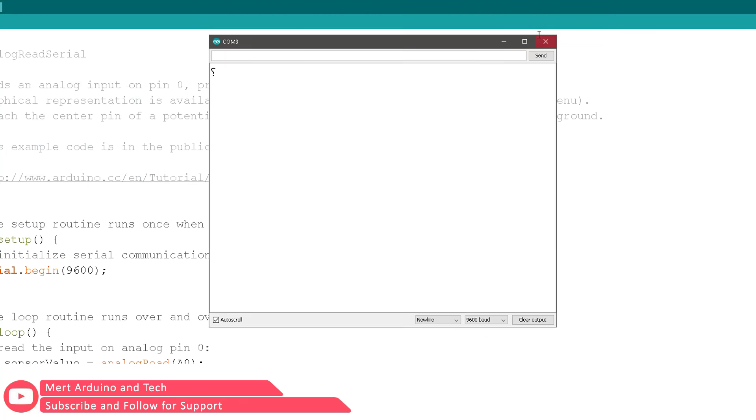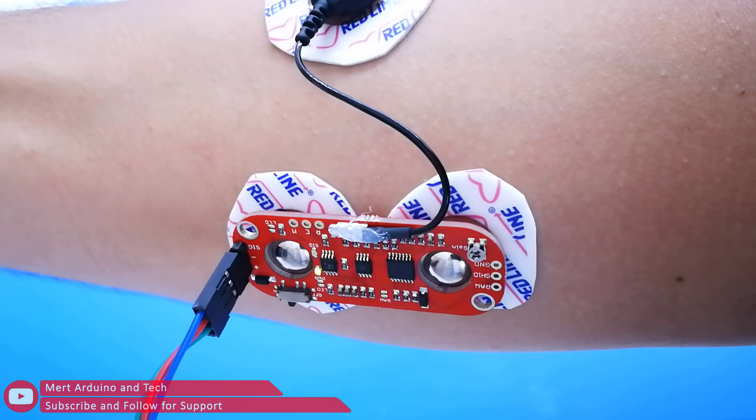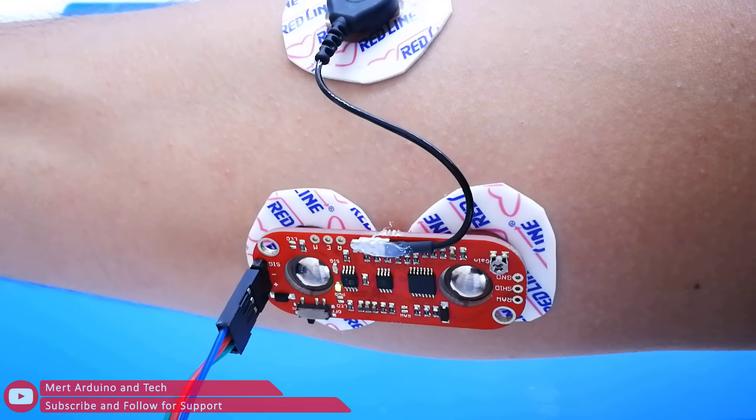Open up the serial monitor in Arduino and make a fist. When you flex the muscle, the values increase, and when released they will decrease.